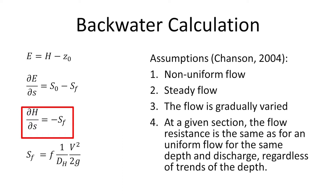I will introduce the mean specific energy, E, which is equal to the mean total head, H, minus the bed elevation, Z0. The rate of change of the mean specific energy with respect to s is defined as the bed slope minus the friction slope. A rearrangement of these equations gives the backwater equation, as highlighted in red, where the rate of change of the mean total head, H, with s is equal to the negative of the friction slope.